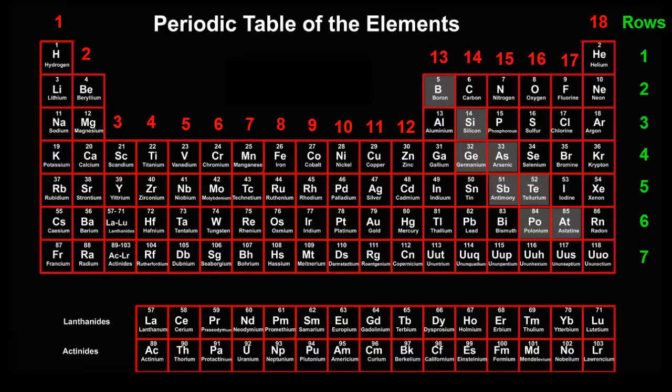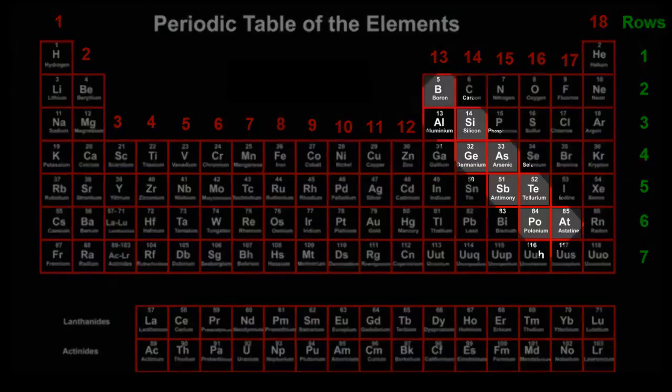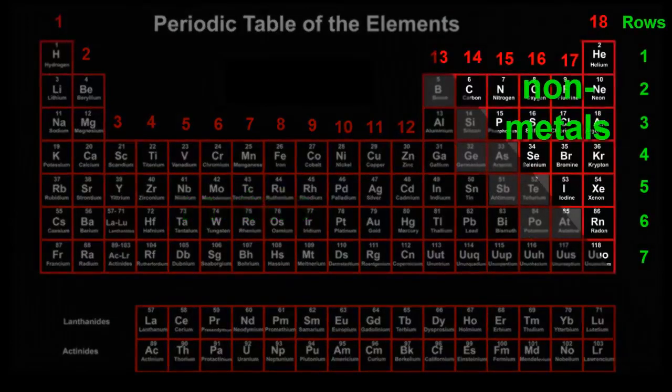Can you see the grey diagonal band that splits the periodic table into two parts? This divides the elements into metals on the left and non-metals on the right.